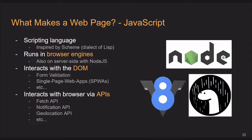You can do things like form validation — if you want to make sure you're actually entering a valid email, you can do that validation with JavaScript. You can also make single page web apps using things like React or Angular, where it's actually only one page but you're using JavaScript to modify the content of that page. You can also interact with the browser via APIs — the fetch API can be used to make HTTP requests, replacing the old XHR requests.